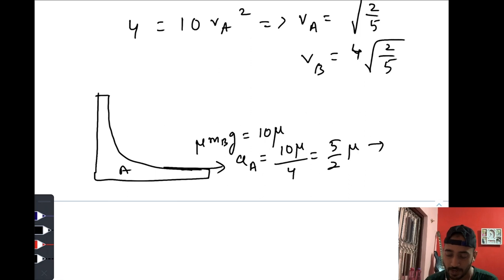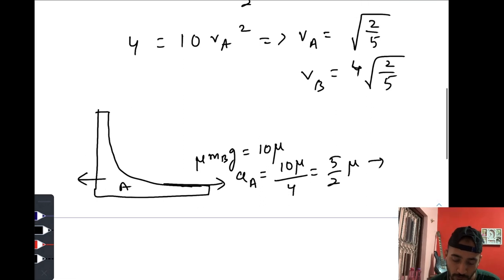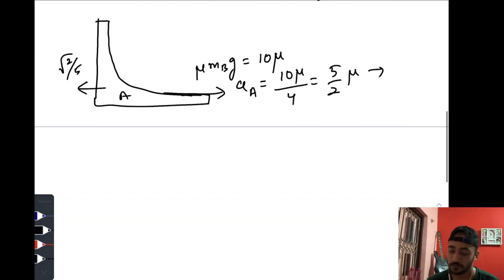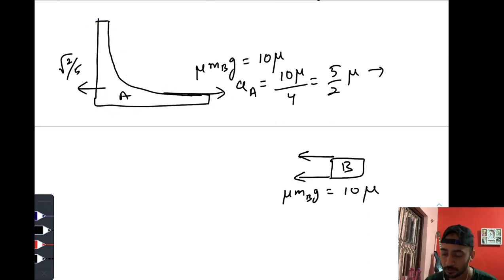And at this instant, just at the beginning, velocity of A is how much? Root 2/5 towards the left. Now when you are observing block B while standing on block A, there would be two forces: one is the frictional force, that is μ mB g, which is 10μ; and one is the pseudo force, because you are standing on a non-inertial frame and you are observing a particle. So that would be mass of block B times acceleration of block A, that is 5/2 μ towards the left.